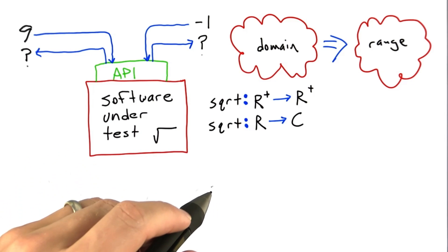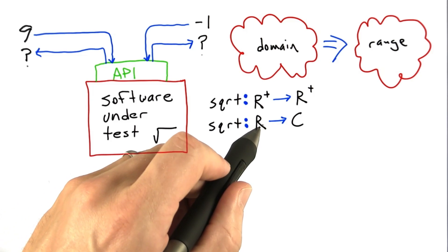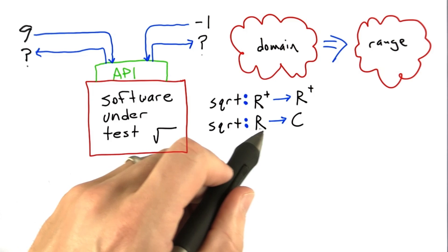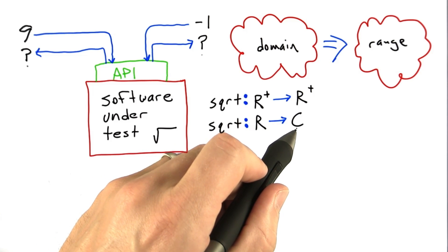Alternatively, if we're implementing mathematical software, we might want to define square root for all real numbers, in which case the domain is the full set of real numbers and the range is the set of complex numbers.